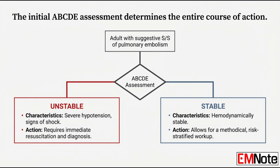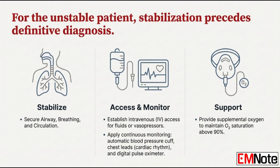So what does that unstable patient look like? Usually it's caused by a massive embolus. You're seeing hemodynamic collapse — severe hypotension, maybe the need for vasopressors. Your priority is just keeping them alive: stabilizing the airway, breathing, and circulation. Get intravenous access and get it now. You need to be ready with fluids or vasopressors. And monitoring — all of it: automatic blood pressure cuff, chest leads for continuous cardiac monitoring, and a digital pulse oximeter.